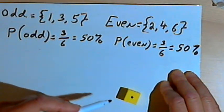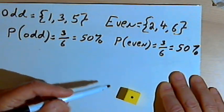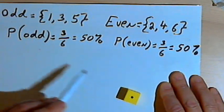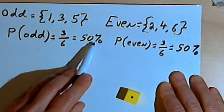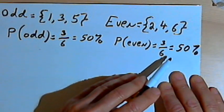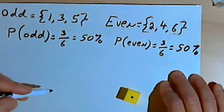So the more times I do that experiment, 10,000 times, 100,000 times, the closer my experimental probabilities will be to 50 percent for odd and 50 percent for even. Okay? Now, just one word of warning.